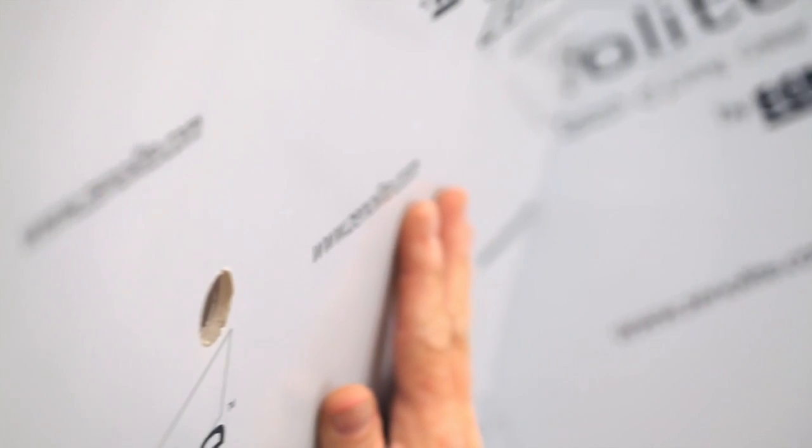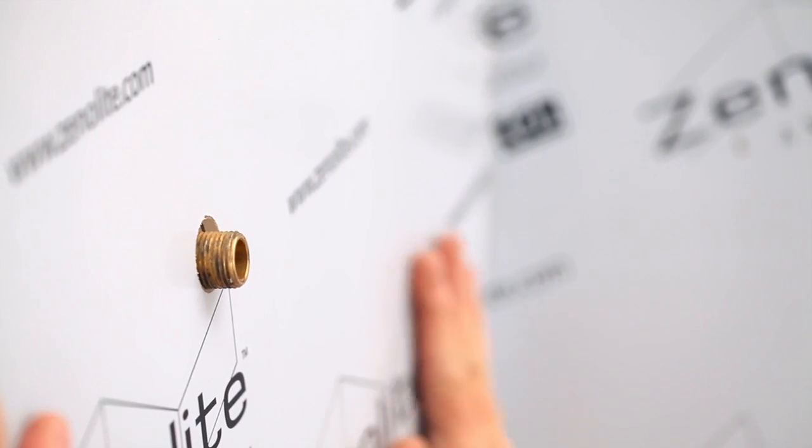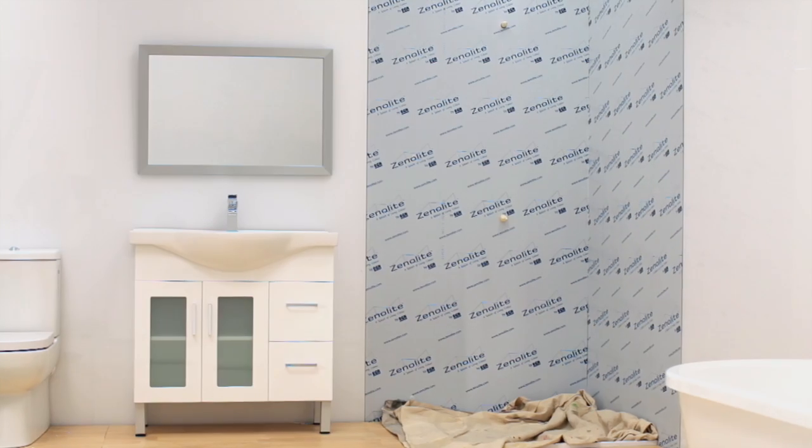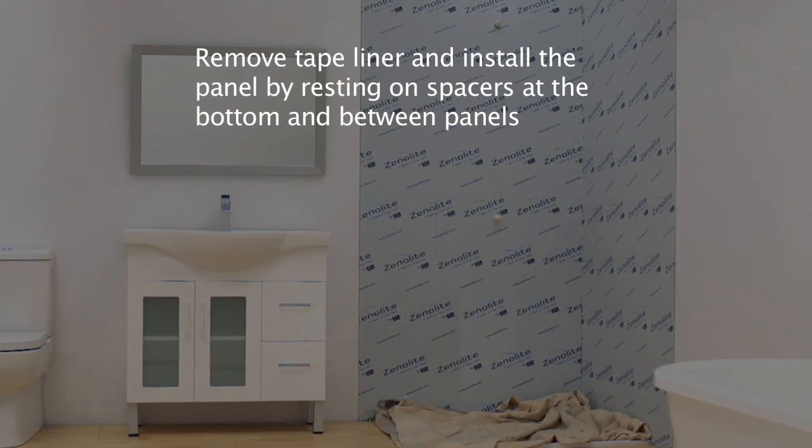Once correctly in place, push the sheet into position and firmly rub down the panel to ensure the adhesive tape bonds and adhesive silicone contacts the wall.